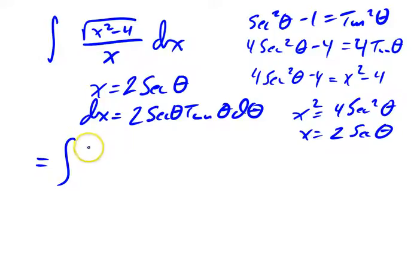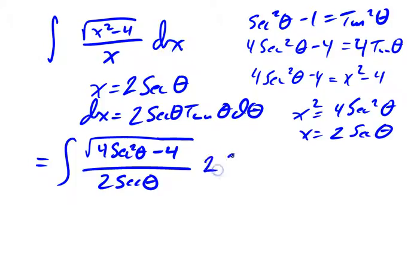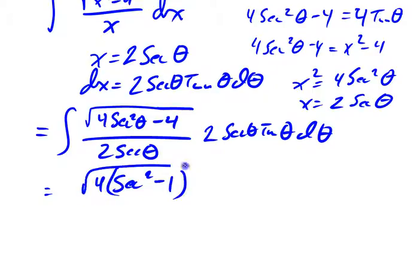So what do I have? On the numerator I've got x squared, so 2 secant theta squared. That's 4 secant squared theta minus 4, over x which was 2 secant theta, times dx which is 2 secant theta tan theta d theta. So that initial substitution certainly makes this look more complicated, but we did it with a purpose. That stuff inside there — the 4 factors out — so you get 4 times the secant squared minus 1, all under the square root. And the 2 secant theta in the numerator and denominator are going to cancel out.